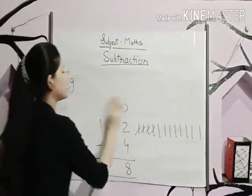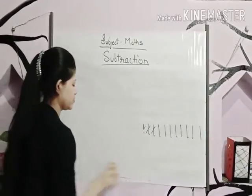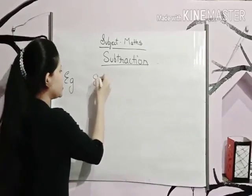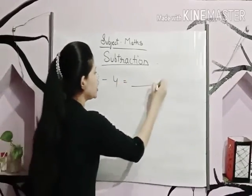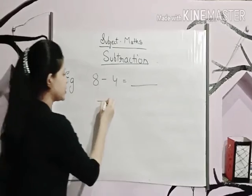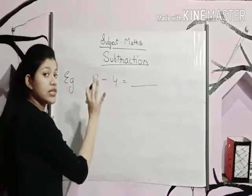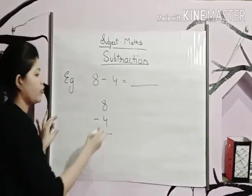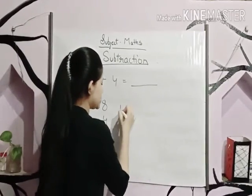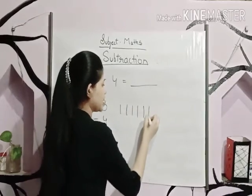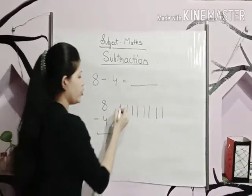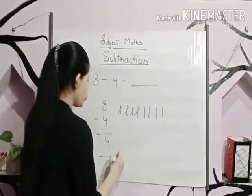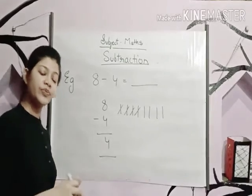Let's take one more example. Eight minus four is equal to dash. First we will arrange the numbers — here there are only ones digits. So we draw eight lines and subtract four, leaving four. Four is left.